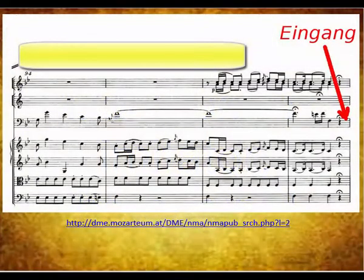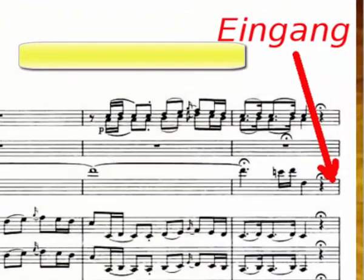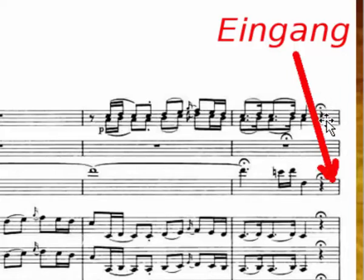The Eingang, or lead-in passage, is very important in the concerto, both as an introduction to a structurally important tutti section and as an expression of artistry. Newman defines an Eingang as an introductory passage that leads into a theme. An Eingang is needed in the first movement in measure 97 to lead into the orchestral tutti section. Notice that it is signaled with a fermata.